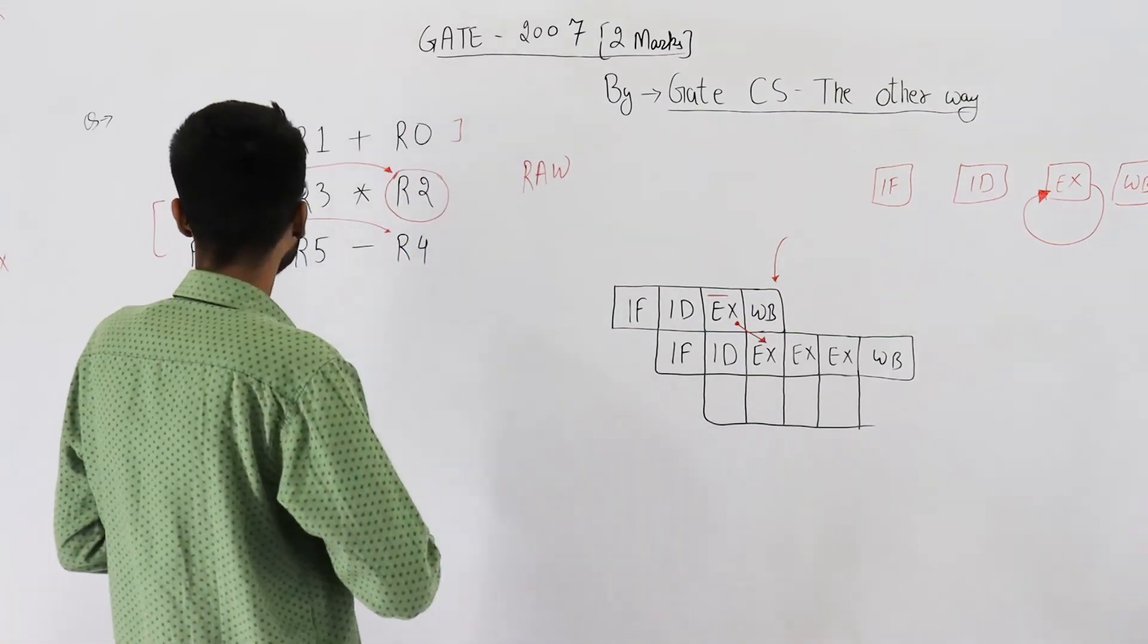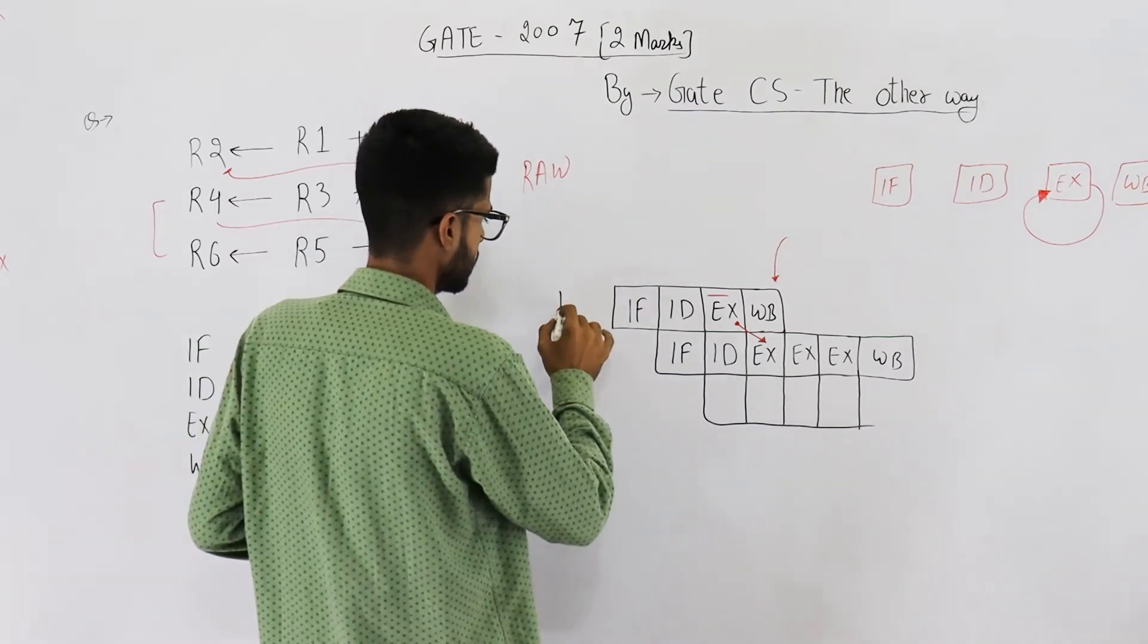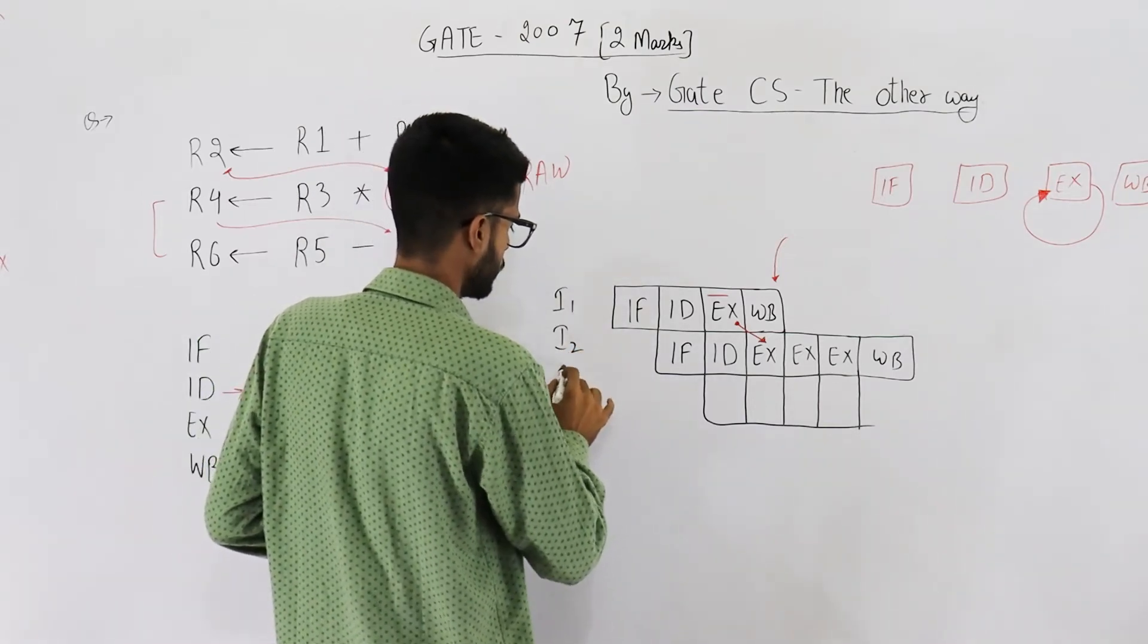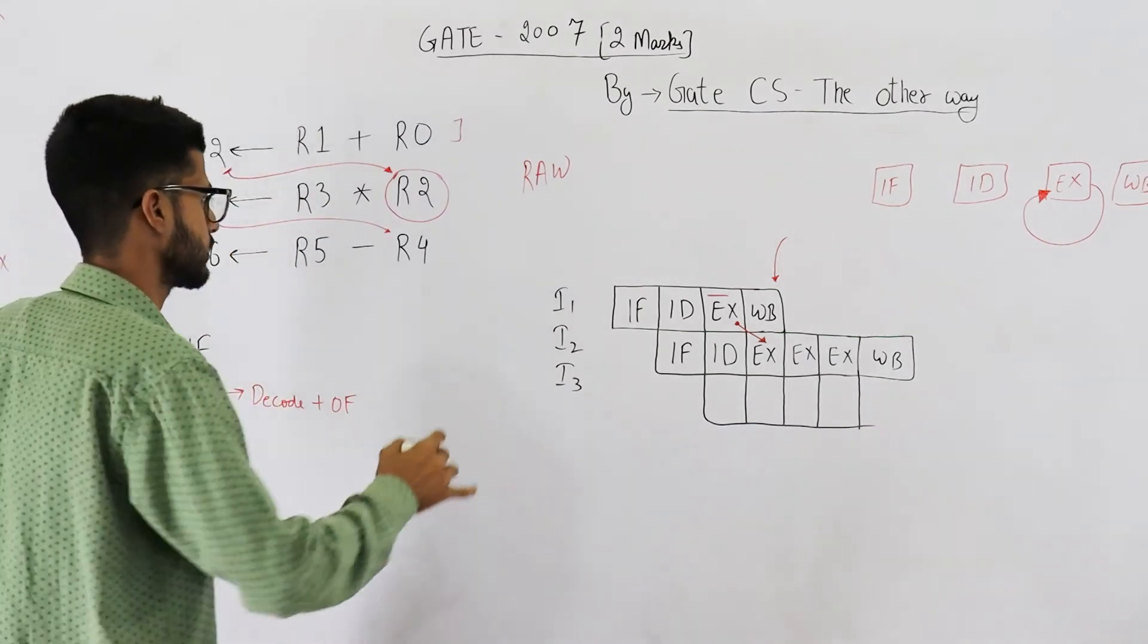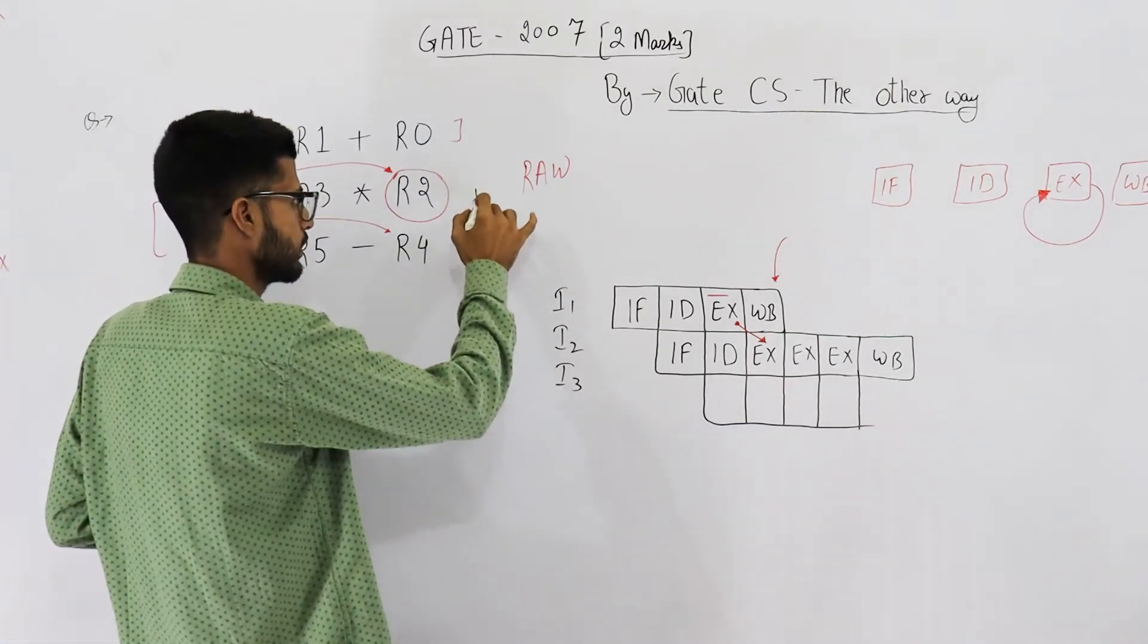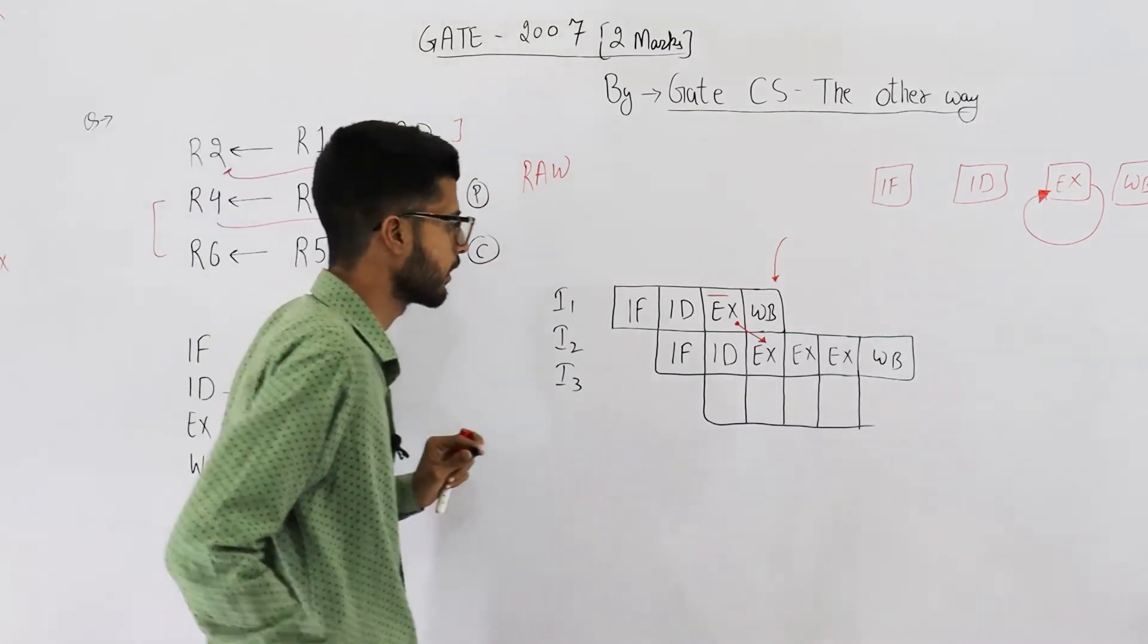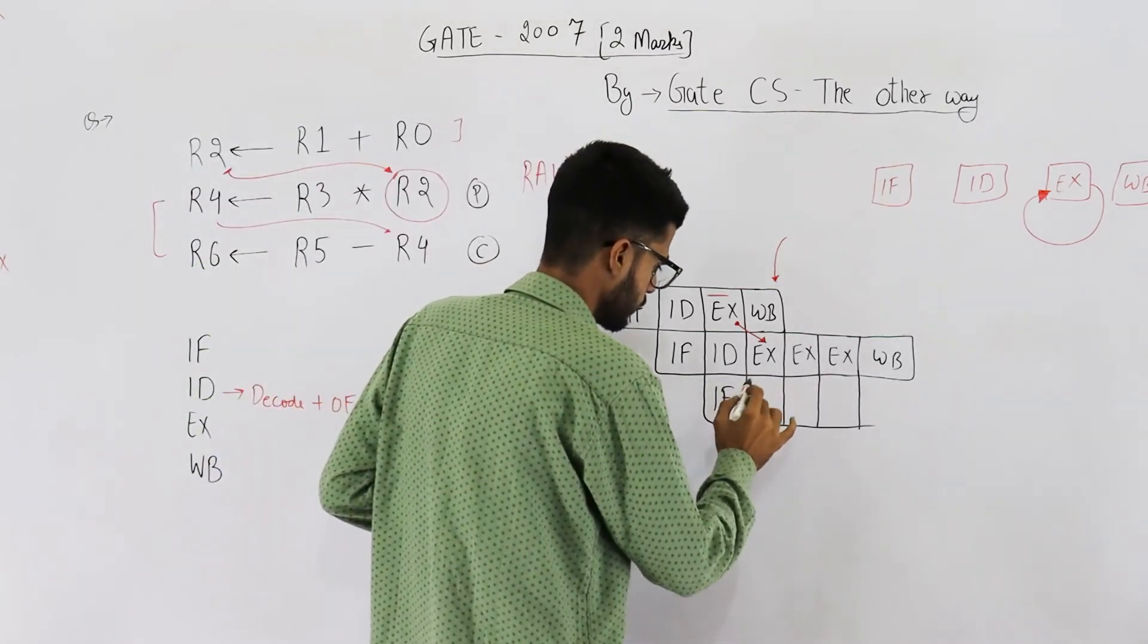Now let's move ahead. The third instruction, this is I1, I2, I3. The third instruction uses the value produced by second instruction. This one is consumer, this one is producer, this one is producer.